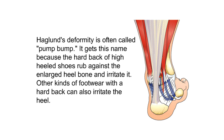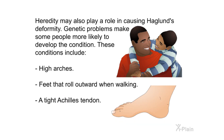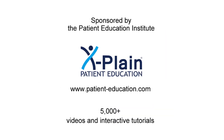Haglund's deformity is often called pump bump. It gets this name because the hard back of high-heeled shoes rubs against the enlarged heel bone and irritates it. Other kinds of footwear with a hard back can also irritate the heel. Haglund's deformity is usually the result of bursitis, which happens when bursa in the heel become irritated by pressure. Heredity may also play a role — genetic factors make some people more likely to develop the condition, including high arches, feet that roll outward when walking, or a tight Achilles tendon.